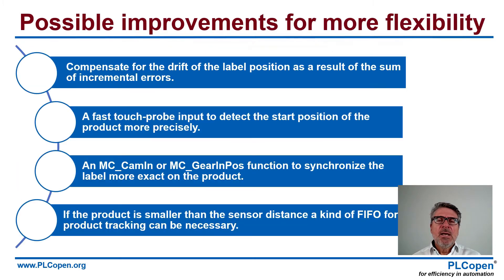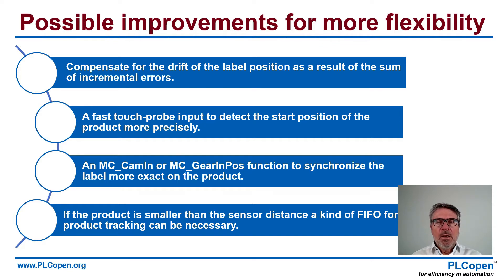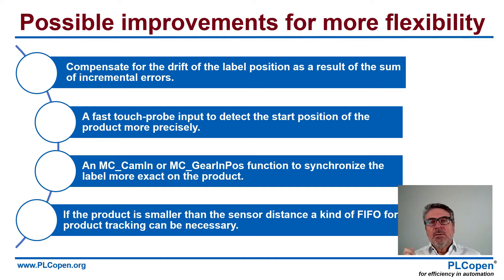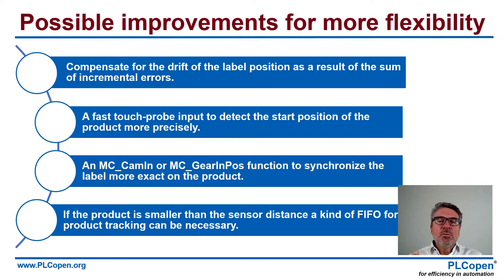So that is the delay between the detection of the product and the starting of putting the label on it. Of course, we can do a lot of improvements here. If I do not detect anything on the label processing part — the label drive — that means I can have a small drift, so a detection would help. A faster touch probe would help to create the accuracy. We can use a cam-in or a gear-in pass to have better synchronization between the label and the product. And if the products get smaller than the sensor distance, I need something like a FIFO — first in, first out — to keep track. These improvements increase the flexibility, so if I change the product I do not have to redo my application program.